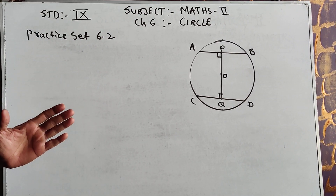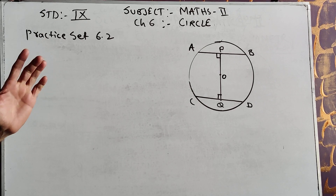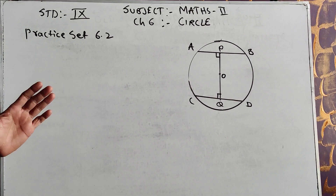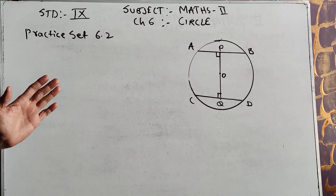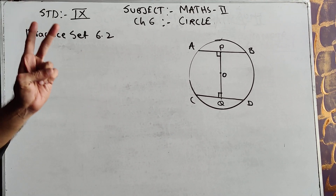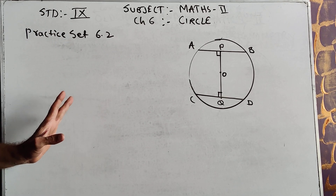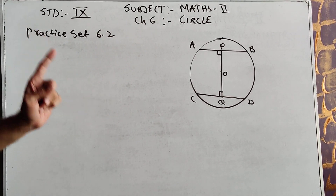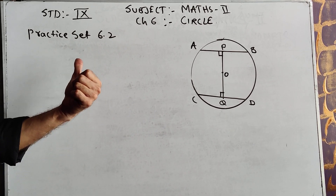In my previous video, I have completed Practice Set 6.1. Now today we are going to start Practice Set 6.2. In Practice Set 6.2, there are only two sums; the third one is omitted by the government. So we are doing only sum number 1 and sum number 2 for Practice Set 6.2.